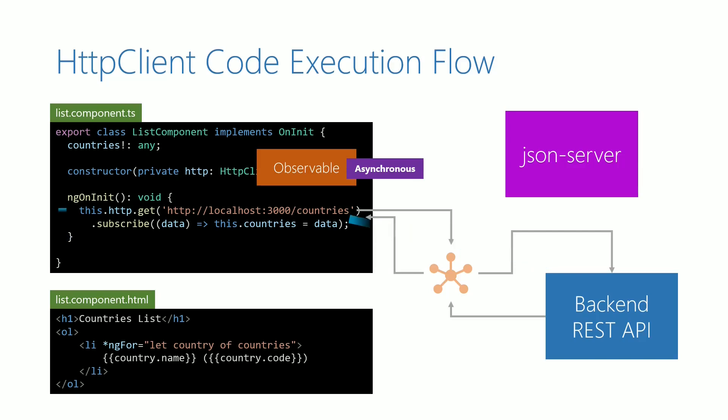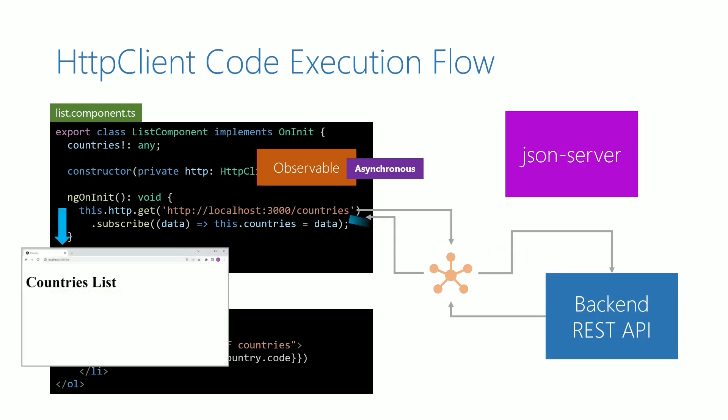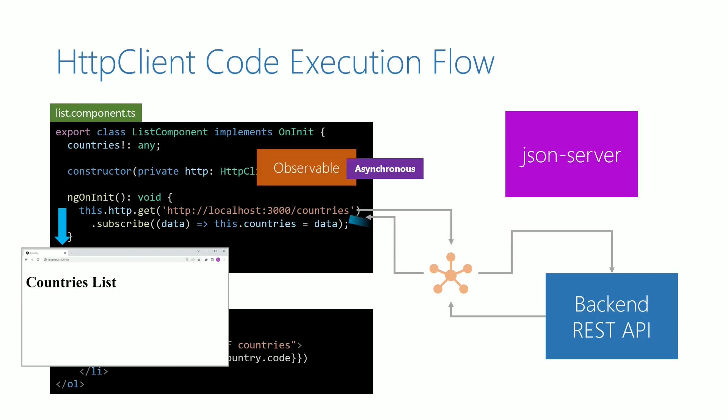The normal execution flow completes the execution of ngOnInit and displays the page in the browser. At this point, only the page heading is displayed and countries are not listed, as data has not yet been received. The other line of execution to get backend data is managed by the observable object, which waits till the data is received. Once data is received, the countries get displayed in the browser. The observable object plays an important role in creating two parallel lines of code execution — one prevents the browser from freezing and the other gets the data from the backend.